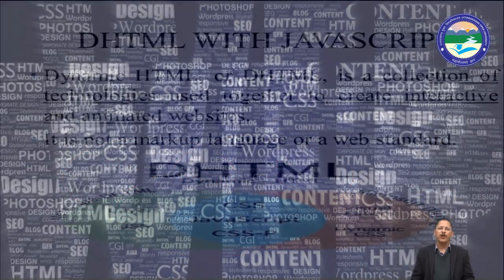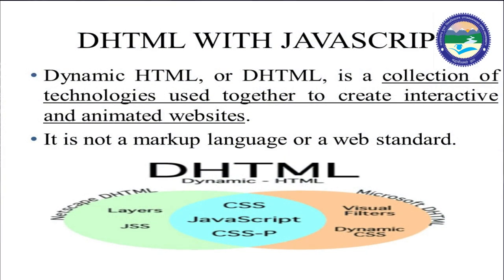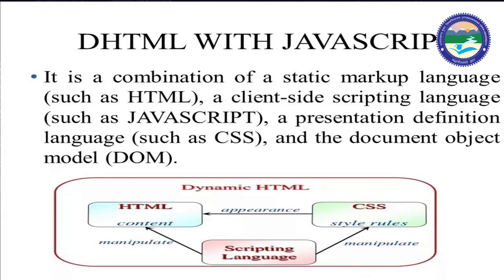DHTML is a collection of technologies used together to create interactive and animated websites. It makes websites very interactive and animated. By using DHTML, we can develop our website with animation. It is not a markup language or a web standard. DHTML is a combination of CSS, JavaScript, and other tools. It also includes static markup language such as HTML, client-side scripting languages like JavaScript and VBScript, presentation definition language such as CSS, and the Document Object Model (DOM).